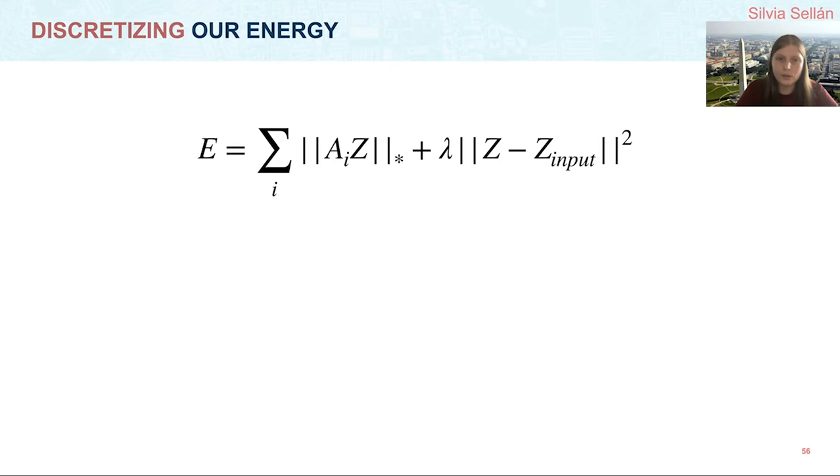Once we have our energy, then the obvious next step is how do we minimize it? Given a Z input and a value of lambda, how do we find the Z that minimizes this energy? This is where all our previous hard work pays off.